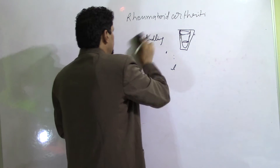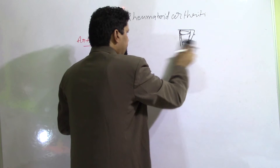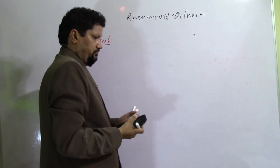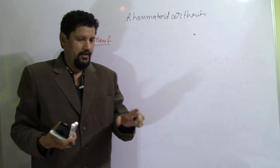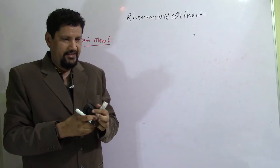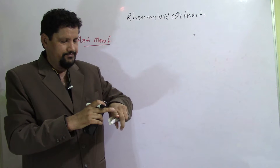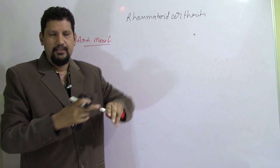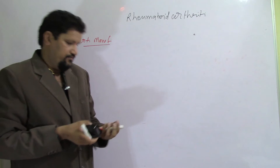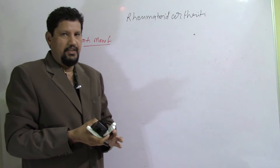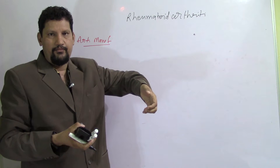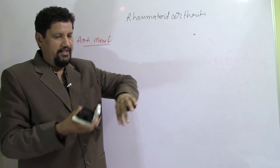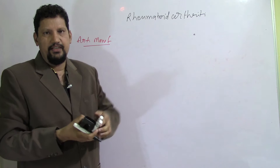Besides these, there will be rheumatoid granulomata of the extensor tendons of the fingers, which can result in dropped fingers due to inactivity or destruction of the extensor tendon.